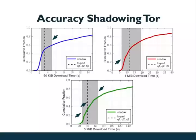Once we have TOR running in the simulator, we need to determine how accurate it is. To do this, we compare the results we see inside of Shadow with results that the live TOR network gathers. We model the TOR network using live consensus from TOR and using other data measurements from the TOR network. We create what we think is a model of the network and run experiments to determine if the performance we see inside our shadowed TOR network is the same as the real TOR network.